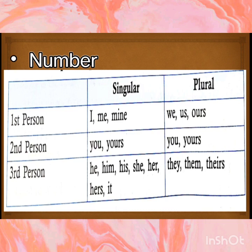Let's start with number. In pronouns, the number has been divided into three persons. First person singular includes I, me, mine. In plural, it includes we, us, ours. Second person includes you, yours. Plural also includes you, yours.